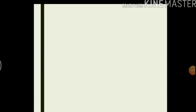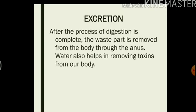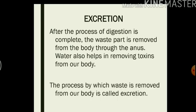Now that we have understood how digestion takes place in our body, let us come to the excretory system. Excretion. After the process of digestion is complete, the waste part is removed from the body through the anus. Water also helps in removing toxins from our body. The process by which waste is removed from our body is called excretion. And just like the digestive system, there are some organs that are involved in this process. Let us have a look at our excretory system.